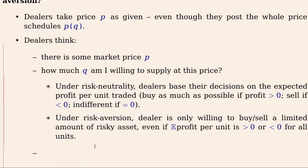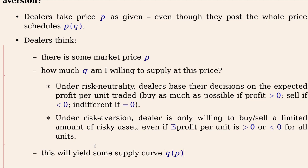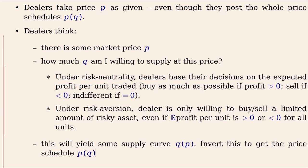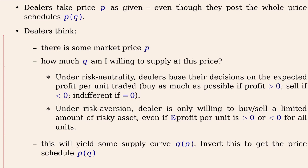This decision yields some supply curve Q of P. Once we answer that question, we will know how much dealers are willing to supply at any given price P. We will then invert this to get the price schedule P of Q. That's how we solve the Stahl model; that's how we solve the Kyle model with risk aversion. I hope this is clearer now than it was before.